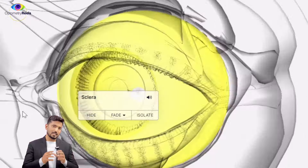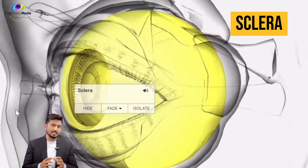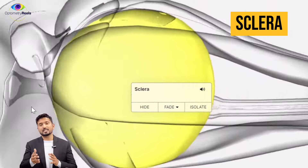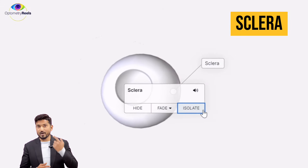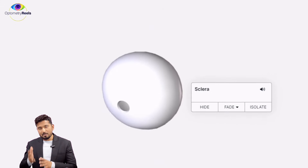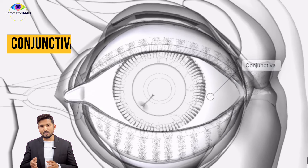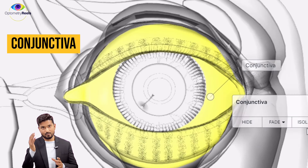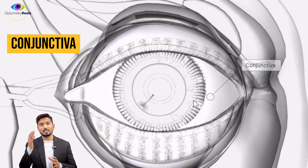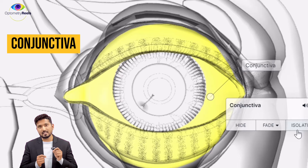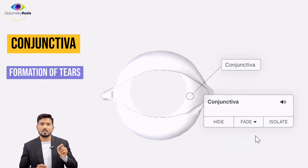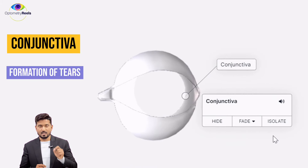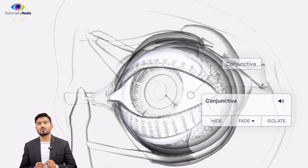The basic structure of the eye is the sclera, which is the outer coat of the eye, also known as the white of the eye. On top of the sclera we have the conjunctiva, which is a clear transparent film or layer that contains certain glands responsible for the formation of tears. Basically, the conjunctiva releases mucus, which is a mucoid substance.